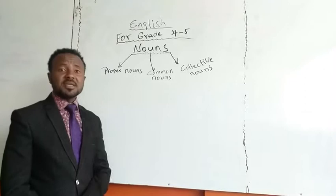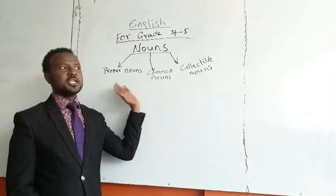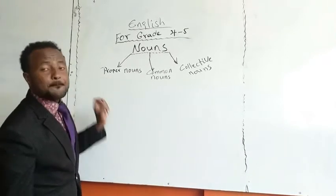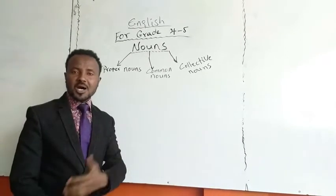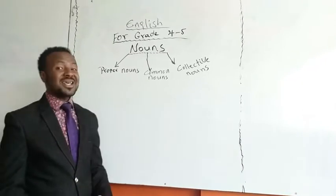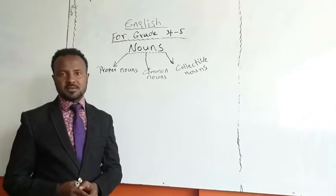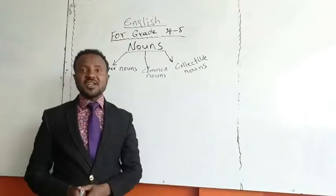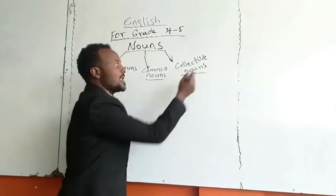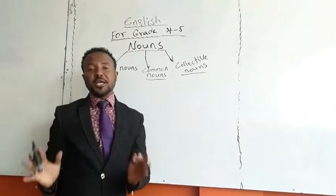Nouns can be classified into three. One: proper noun. Proper noun is a particular name. Common: any name. Collective nouns are group names.